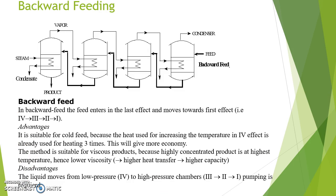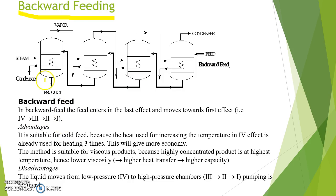The next method is backward feeding. In this case, the feed enters the evaporator from the last effect, then moves to the third, then to the second, then to the first effect evaporator, and finally the product is obtained from the first effect evaporator. Steam is supplied into the first effect, then to the second, then to the third, then to the fourth effect.